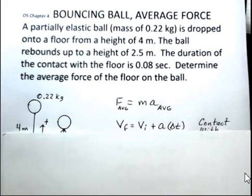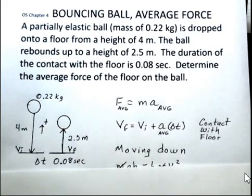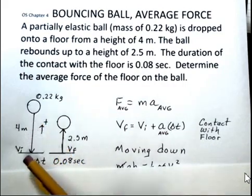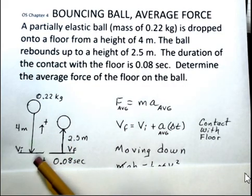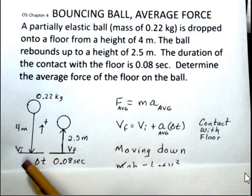We're told in this problem that the ball is in contact with the floor for 0.08 seconds. So that's the length of the collision. We want to know what the average force is of the floor on the ball. I'll draw a little picture of this and then some notations off to the right. 4 meter height, we drop down, and interested in the collision going on.